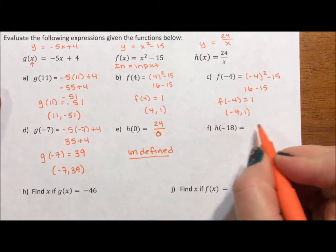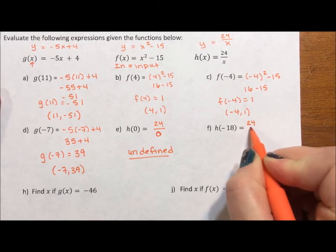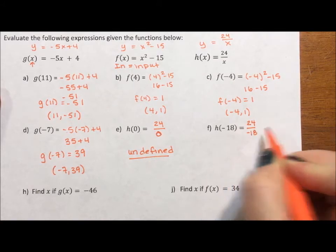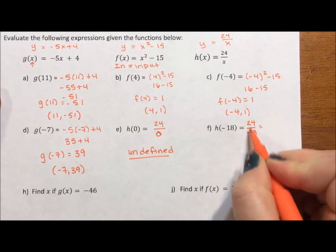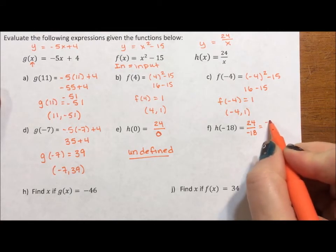h(-18). 24 over -18. I'm going to reduce this. I'm going to divide a 6 out of top and bottom. And I'm going to move the negative up top. So it's -4/3.